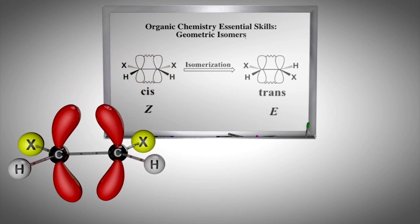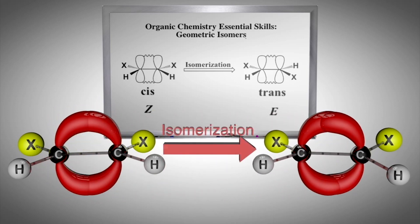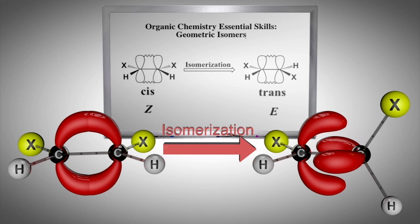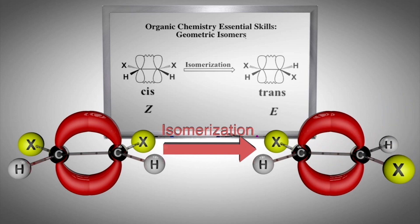For interconversion of the isomers to occur, we need to have free rotation about the C-C double bond. If this were to happen, it would mean that the pi bond would have to break, which requires approximately 70 kcals per mole. This will cause each carbon to lose full valency due to the two p orbitals no longer overlapping. In other words, both carbon atoms will have only seven electrons instead of the desired octet, which will make the alkene unstable or higher in relative energy. Thus, at room temperature, geometric isomers are isolable.